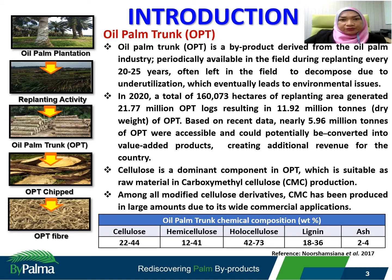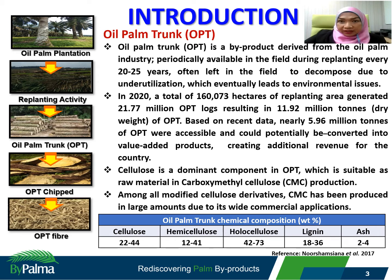Apart from that, older OPT — for example, 25 to 30 years old — contains higher levels of sap that can also be a source of sugars such as glucose, sucrose, fructose, and galactose, which can become a food source for pests.